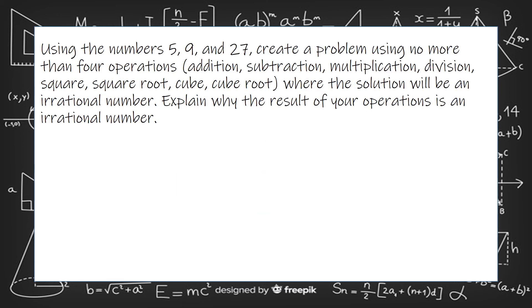Using the numbers 5, 9, and 27, create a problem using no more than four operations: addition, subtraction, multiplication, division, square, square root, cube root, or cube, where the solution will be an irrational number. Explain why the result of your operation is an irrational number.